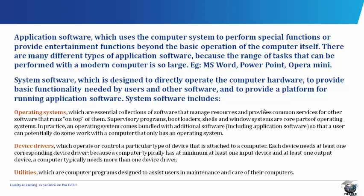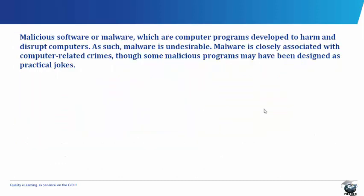Utilities are computer programs designed to assist users in maintenance and care of their computers. Malicious software, or malware, are computer programs developed to harm or disrupt computers, such as viruses, spywares, and the rest of them. Such malware is always undesirable. Malware is closely associated with computer-related crimes, though some of them are just practical jokes.